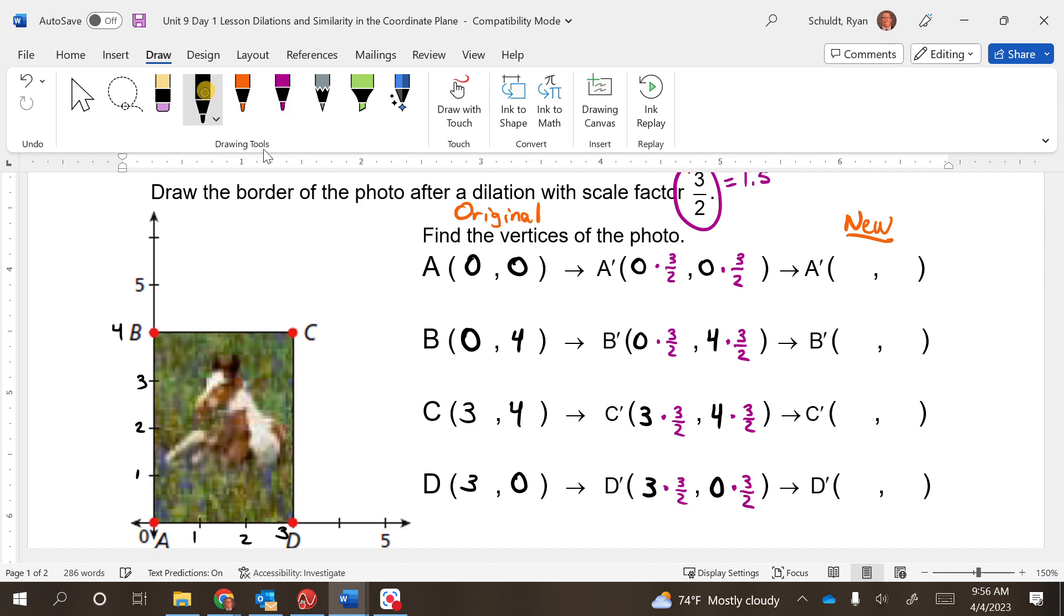So multiplying everything times three halves. Then our new points: zero times three halves is just zero still. Any zeros here I'm going to fill in because it's just zero. Four times three halves gets us 6. That's going to be a 6. Three times three halves is nine halves or 4.5. I'm going to leave it as nine halves but you could have also said 4.5.